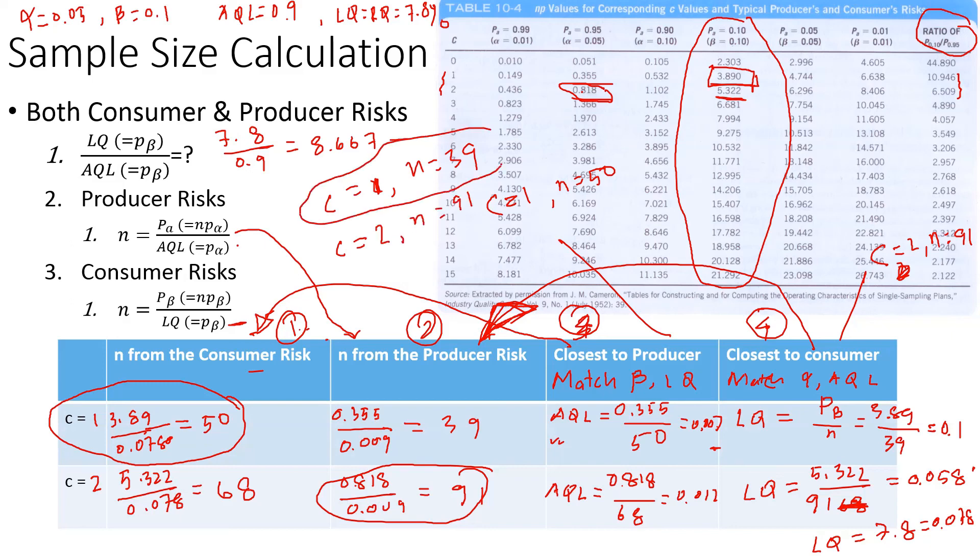So there are four options we can choose from.